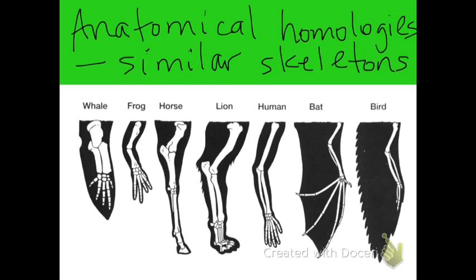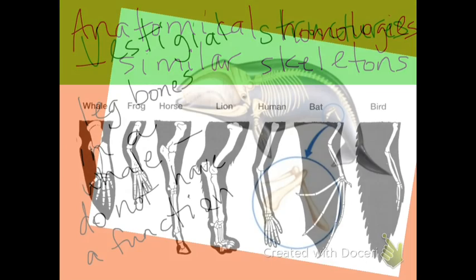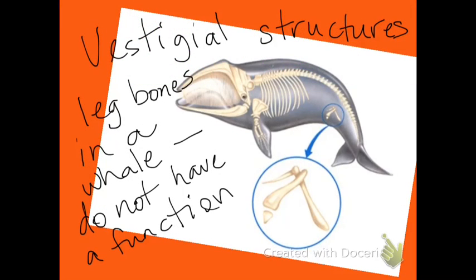This illustration shows anatomical homologies, or similarities, in skeletons of different vertebrates. Vestigial structures are structures that do not currently have a function. For example, whales have leg bones inside of them, although they don't walk on land. There was a time when they did walk on land in the past.